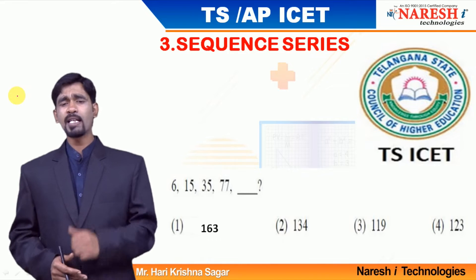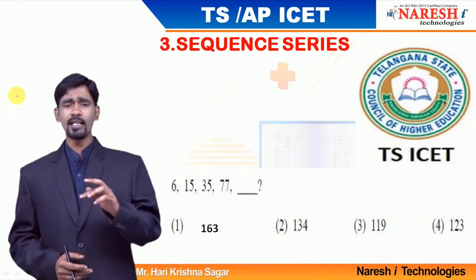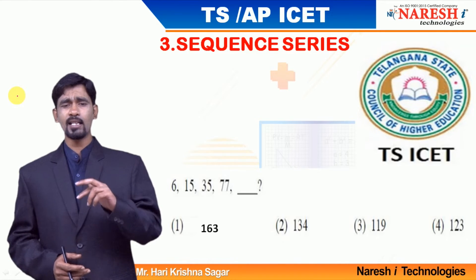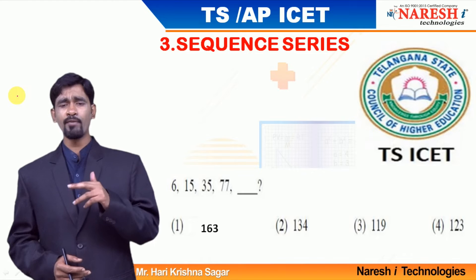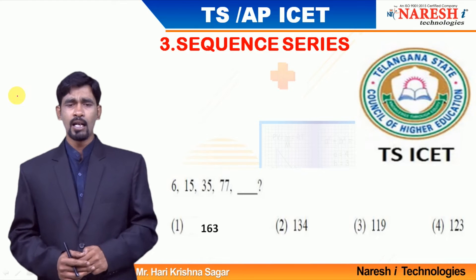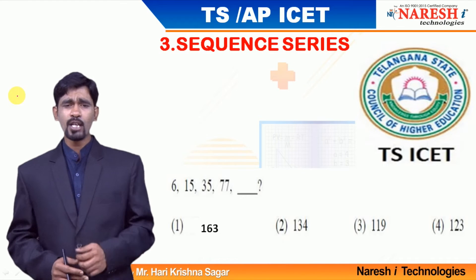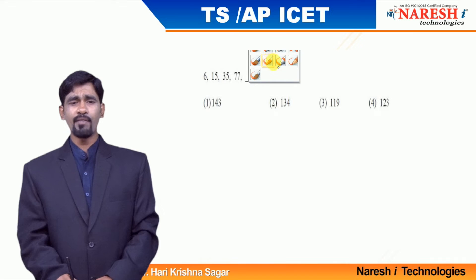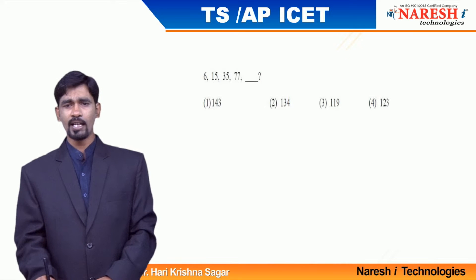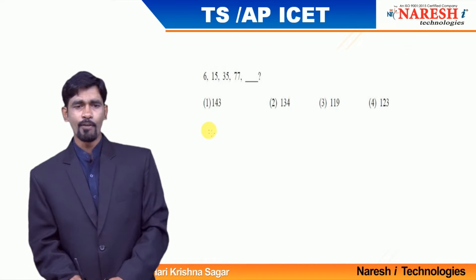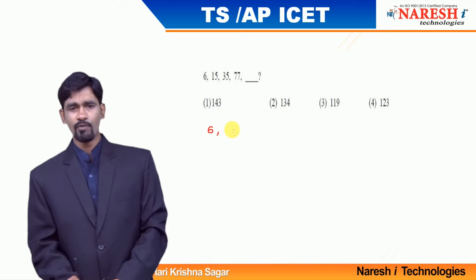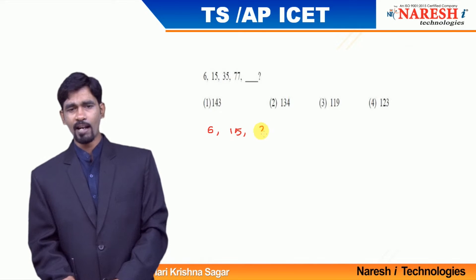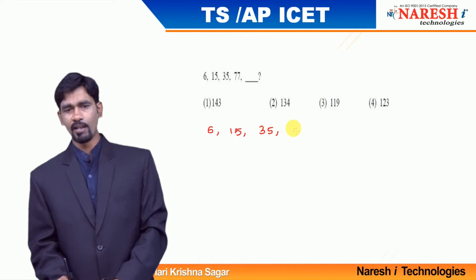What is happening in the sequence? I am trying to observe. Initially it started with 6, then 15, then 35, then 77. Let us try to observe what is happening in the pattern. By observing the given question, we can comfortably say the first number is 6; 6 becomes 15, 15 becomes 35, 35 becomes 77.